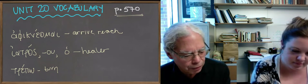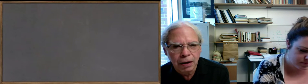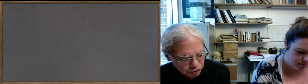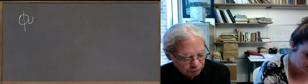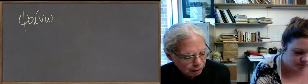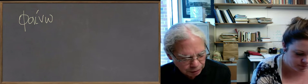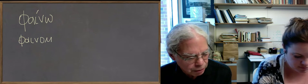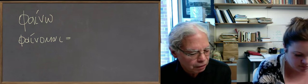Okay, next word is the verb phino, a very common verb in Greek, a really important one. That means to show in the active transitive sense or cause something to appear. And in the middle, which is extremely common, it means to appear or seem.